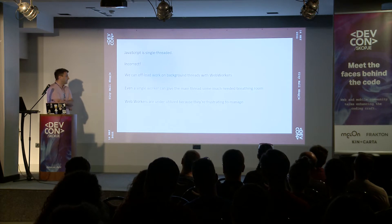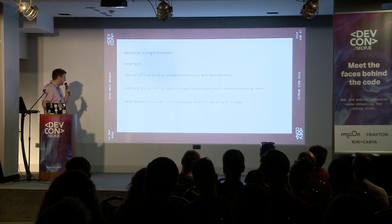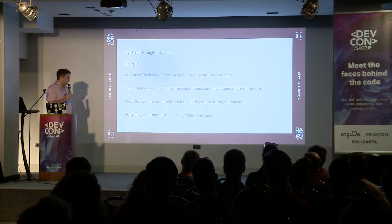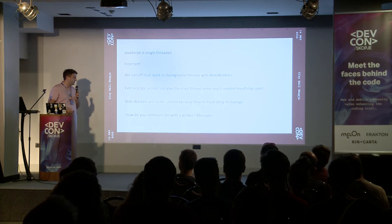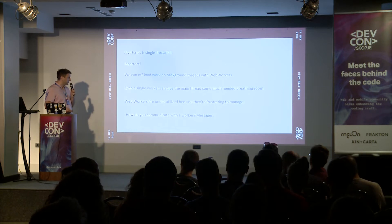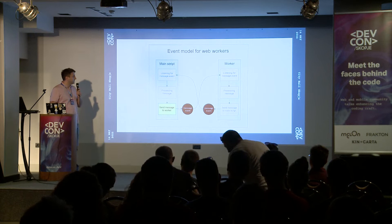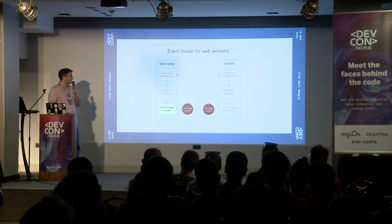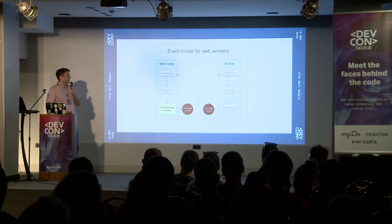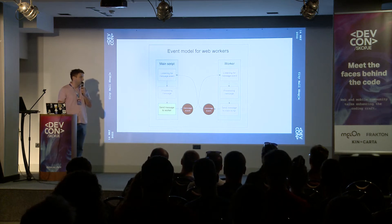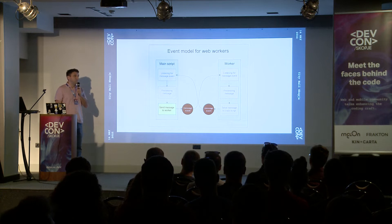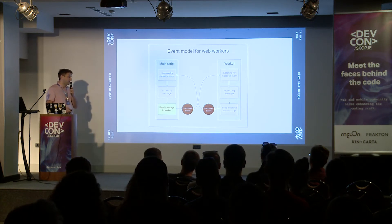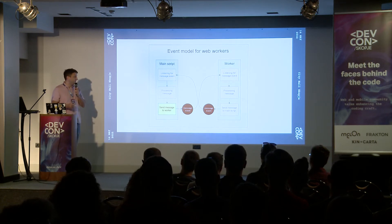Web workers are underutilized because they are frustrating to manage. This is because the web workers API is quite complicated — it's not like normal functions that are called. Everything is done through messaging. We have the main JavaScript thread where most of the code is executed, and if we instantiate a worker, all communication goes through messaging. A worker can listen to events, process some code, and send the result back to the main script, but it cannot invoke a function and immediately return the result.